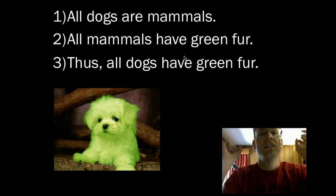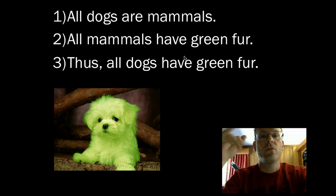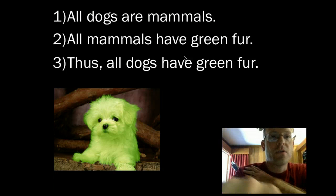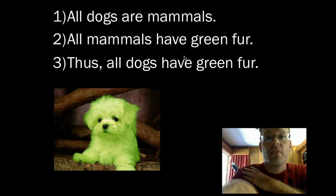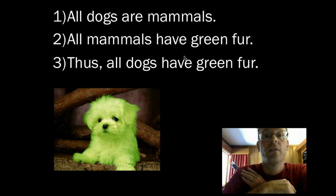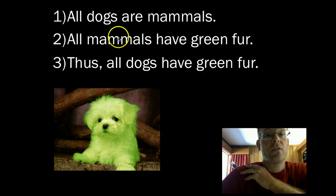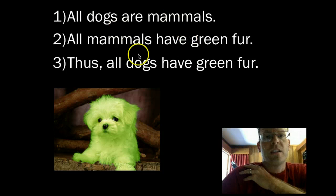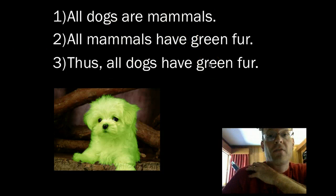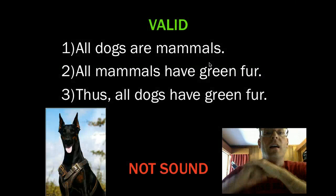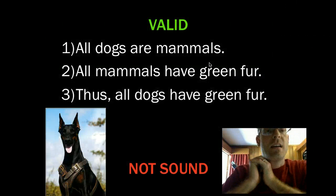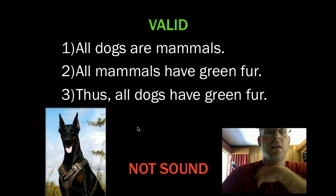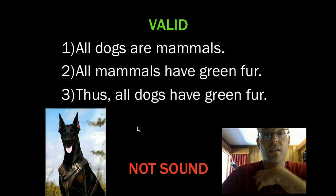When we're talking about validity, you just want to ask if the premises are true, does the conclusion follow? Suppose all dogs are mammals. Suppose all mammals have green fur. Does it follow that all dogs would have green fur? Yes, it would — because all dogs are mammals, and all mammals have green fur. It's something like all A are B, all B are C, thus all A are C. That would be valid. But obviously it's not sound, and that's because not all dogs have green fur. Here's an example of a dog right here — a Doberman Pinscher — who doesn't have green fur.